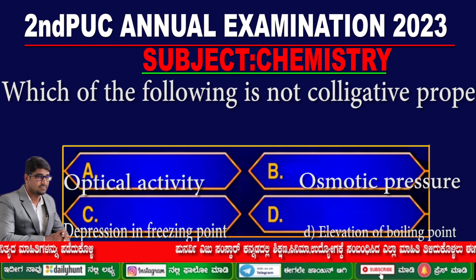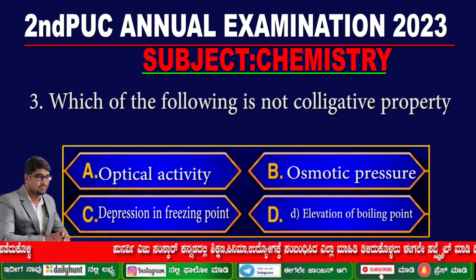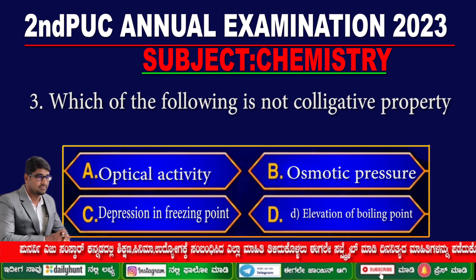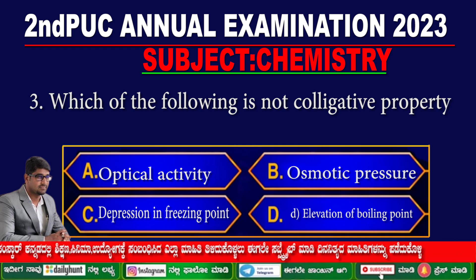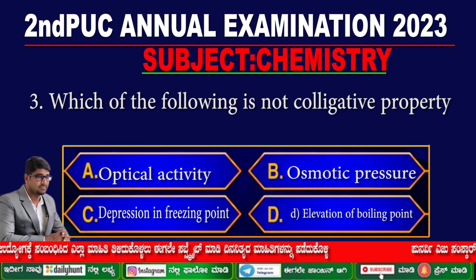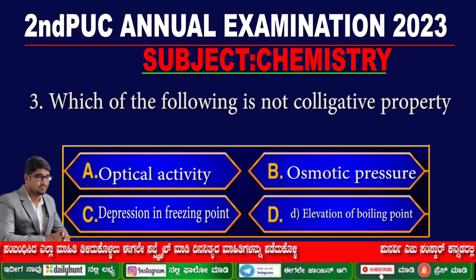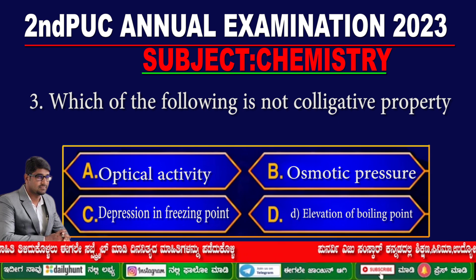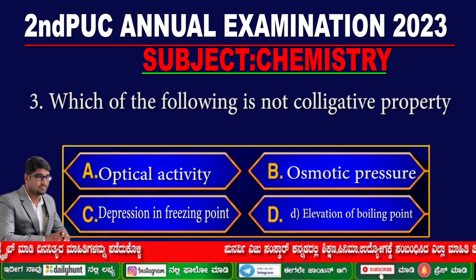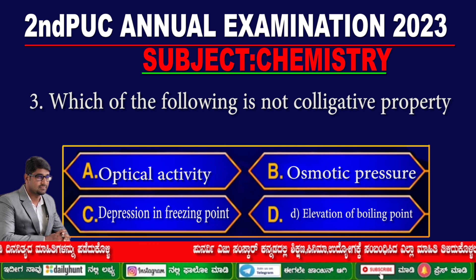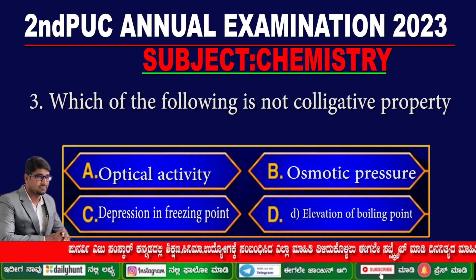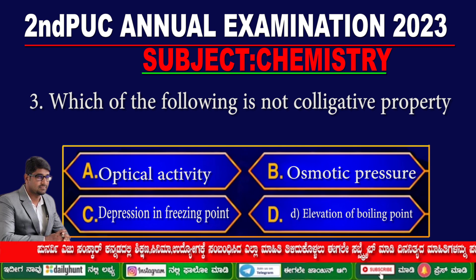Question 3. Which of the following is not a colligative property? Option A: optical activity, option B: osmotic pressure, option C: depression in freezing point, option D: elevation of boiling point.